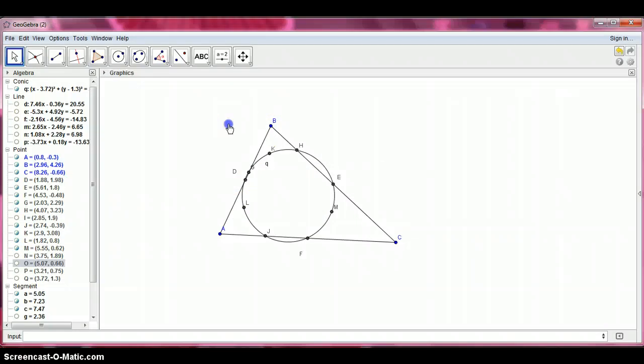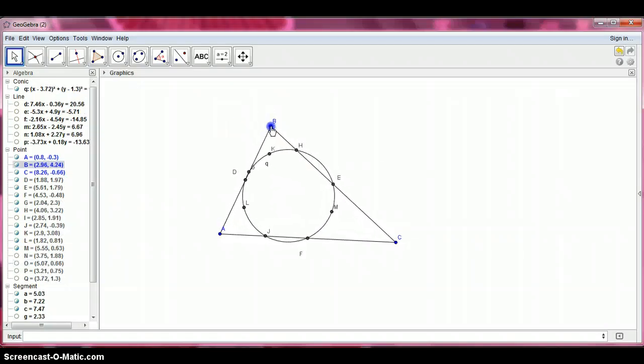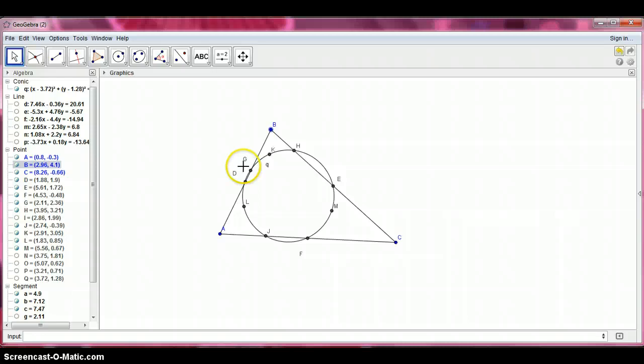Thus, we have our nine point circle, which is created by points D, G, K, H, E, M, F, J, and L.